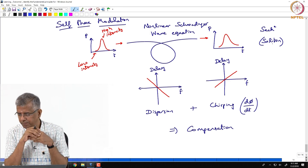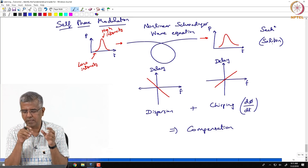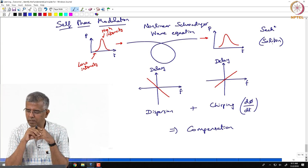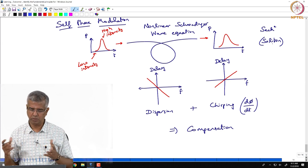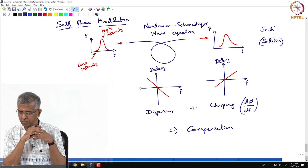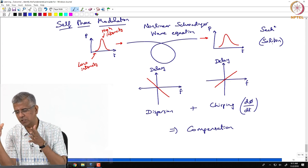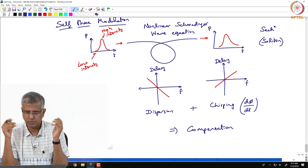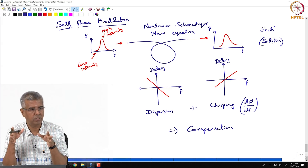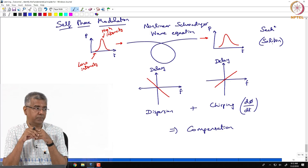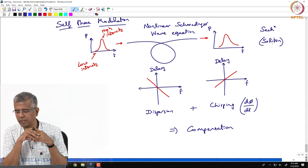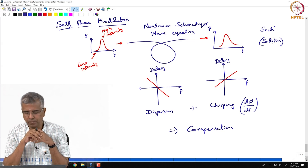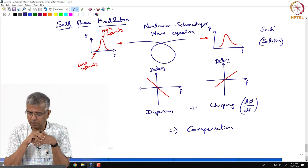There were other issues with the propagation of solitons in practical systems, and people eventually gave up on that idea. What we do now in communication systems — which you learn in a fiber optic communication technology course — is let dispersion happen in the fiber over say 100 kilometers, then use a dispersion compensation element to restore the original pulse shape, then let it accumulate dispersion again, then compensate again. This is called a dispersion managed system, which is what is practically implemented in modern day communication systems.